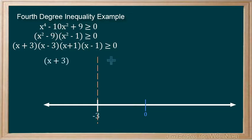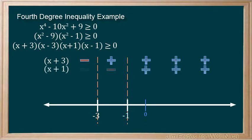x plus 3 is positive greater than zero beyond negative 3, and negative when less than negative 3. x plus 1 is positive when greater than negative 1, and negative when less than negative 1, and the other factors.